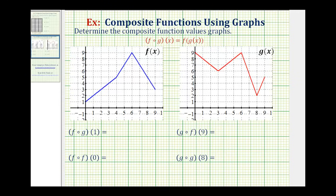We want to determine the composite function values from the graphs of function f in blue and function g in red. From this definition here, we see there are two ways to express a composite function. It's going to be helpful to rewrite these composite functions using the notation given here on the right.